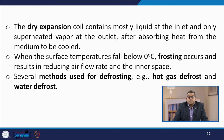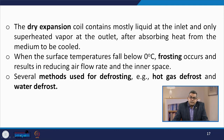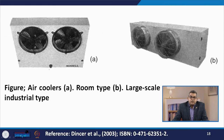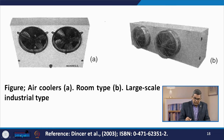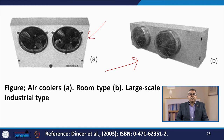Flooded type evaporators are not preferable in practical applications because they require large amounts of refrigerant. A dry coil requires only a small amount of refrigerant, reducing the cost of refrigerant charges. The dry expansion coil contains mostly liquid at the inlet and only superheated vapor at the outlet after absorbing heat from the medium. When the surface temperature falls below 0°C, frosting occurs, reducing airflow rate. Several methods are used for defrosting, like hot gas defrosters and water defrost. Here you can see room type and large scale industrial type air coolers.